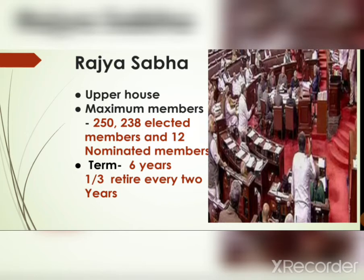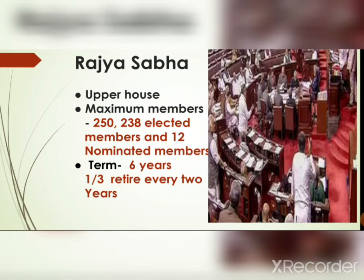Moving further to Rajya Sabha — the Rajya Sabha is also known as the Upper House. The members of Rajya Sabha are not directly elected by the people; they are elected by the members of the State Legislative Assembly. In Rajya Sabha, only 250 members are there — 238 are elected members and 12 members are nominated. They are nominated for a period of 6 years, and one third of the members retire every 2 years.